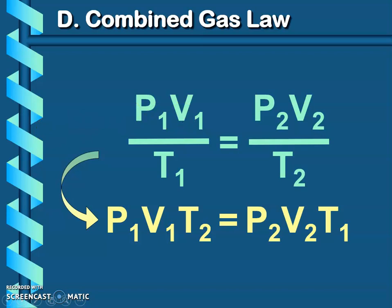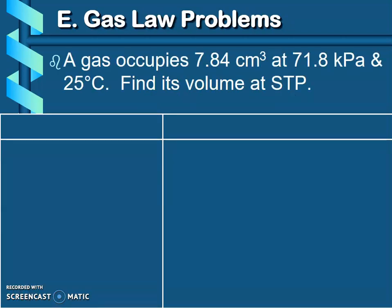All right, so let's take a look at an example problem using the combined gas law. A gas occupies 7.84 cm³ at 71.8 kPa and 25°C. Find its volume at standard temperature and pressure. So like we always do, let's analyze the problem. Let's see what kind of information do I have and what do I ultimately need to know.